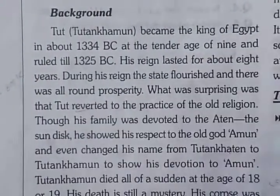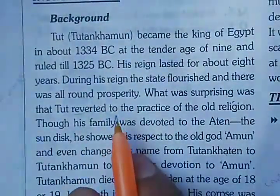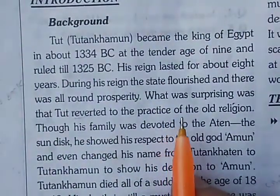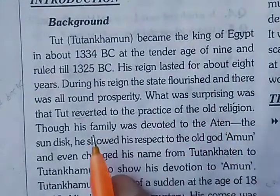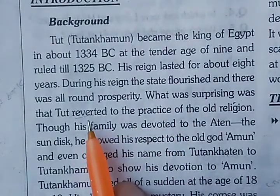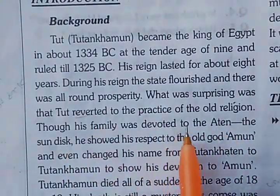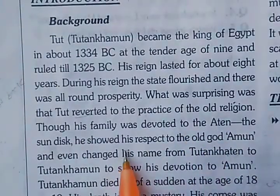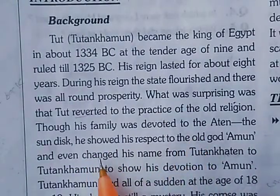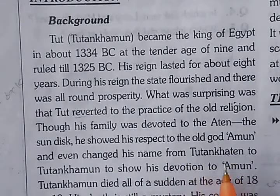During his reign, the state flourished and there was all prosperity. What was surprising was that he reverted the practice. His family was devoted to the Aten — the name of the god is the sun disk. He showed respect to the old god Amun, and changed his name from Tutankhaten to Tutankhamun, showing his devotion to Amun.